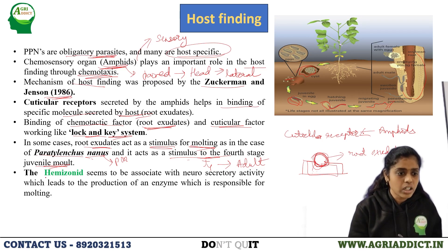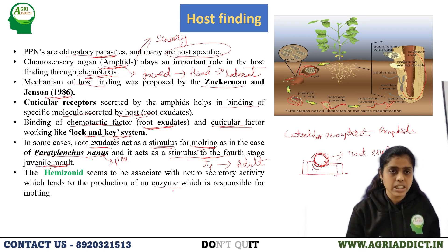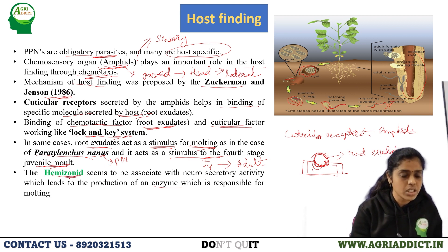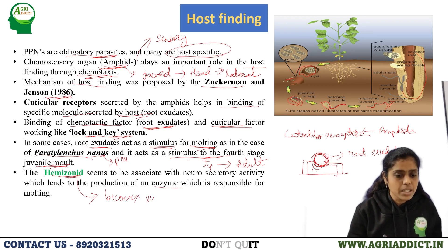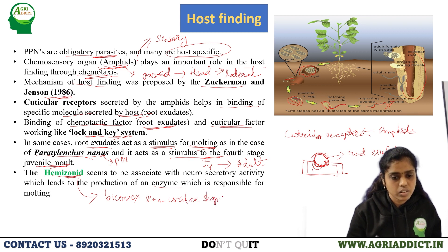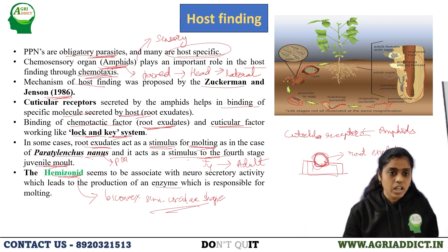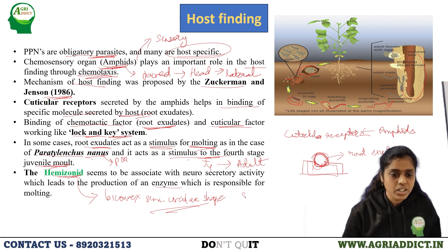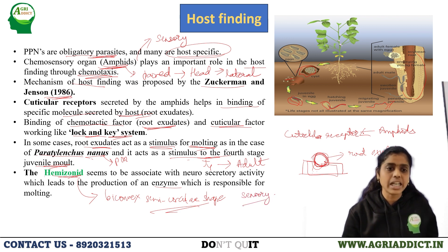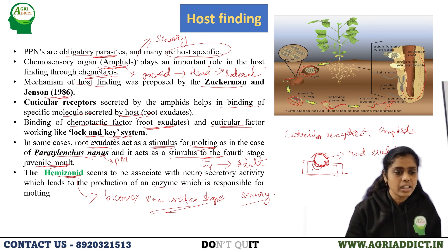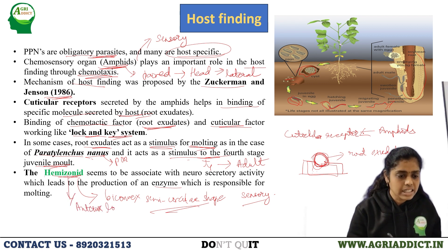The organs involved in producing enzymes responsible for molting are the deirids (amizoneids). These are biconvex semicircular in shape, sensory in function, and help in secretion of enzymes responsible for molting. Their location is anterior to the excretory pore.